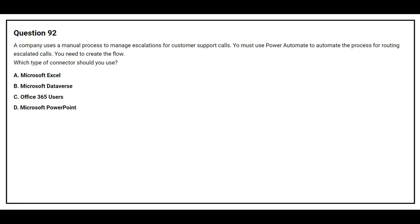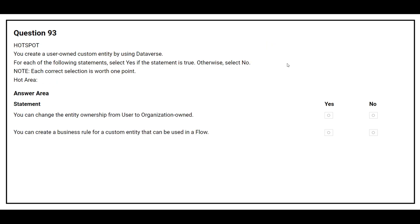Question number 92: A company uses a manual process to manage escalations for customer support calls. You must use Power Automate to automate the process for routing escalated calls. You need to create the flow. Which type of connector should you use? Option A: Microsoft Excel. Option B: Microsoft Dataverse. Option C: Office 365 Users. Option D: Microsoft PowerPoint. The correct answer is option B, Microsoft Dataverse.